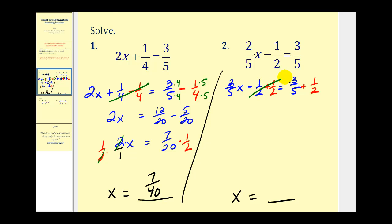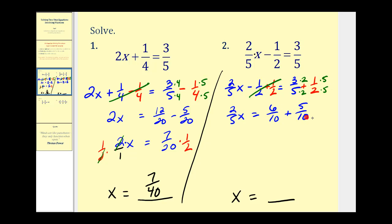Adding one-half to both sides makes the minus one-half become zero — that's why we did that. So we have (2/5)x on the left. On the right, we need a common denominator of ten: multiply 3/5 by two over two, and 1/2 by five over five. Both denominators are now ten, giving us six-tenths plus five-tenths. So we have (2/5)x = 11/10.